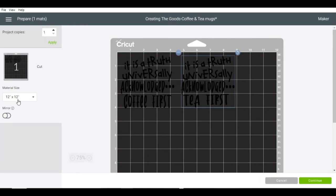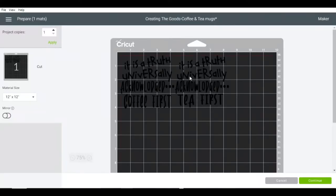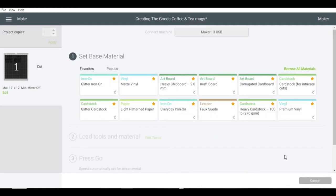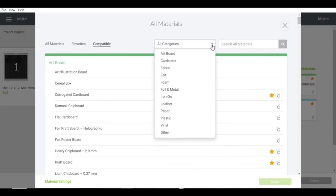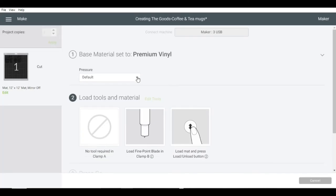We're using a 12 by 12 mat. Mirror is off, this is vinyl, do not need to mirror it. I only want one copy. I'll pick my vinyl, come down to vinyl, premium vinyl. I'll hit more pressure because my knife is kind of dull. I'm going to show you how to put our vinyl on the mat. The white side is down, the shiny side is up. This is not heat vinyl, this is regular vinyl.